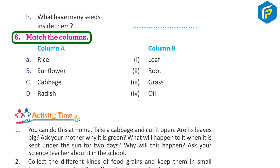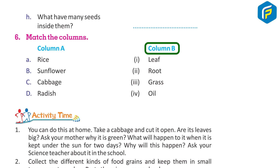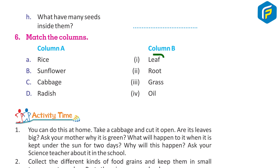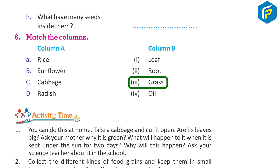Match the columns. Column A: A. Rice, B. Sunflower, C. Cabbage, D. Radish. Column B: 1. Leaf, 2. Roots, 3. Grass, 4. Oil.